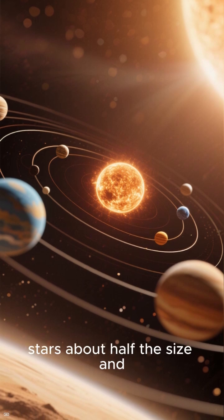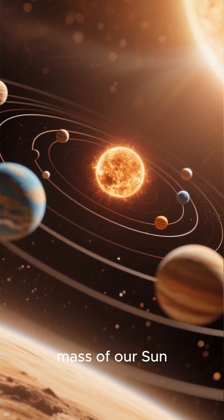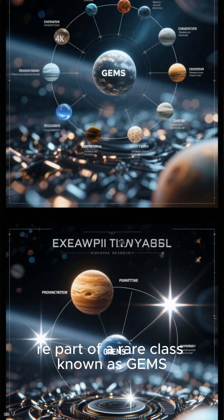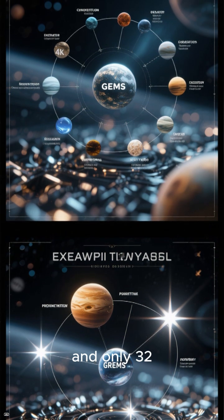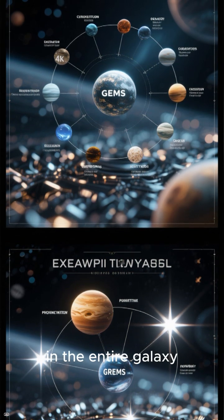Both orbit M-dwarfs, stars about half the size and mass of our Sun. They were part of a rare class known as GEMS, giant exoplanets around M-dwarfs, and only 32 of them are known so far in the entire galaxy.